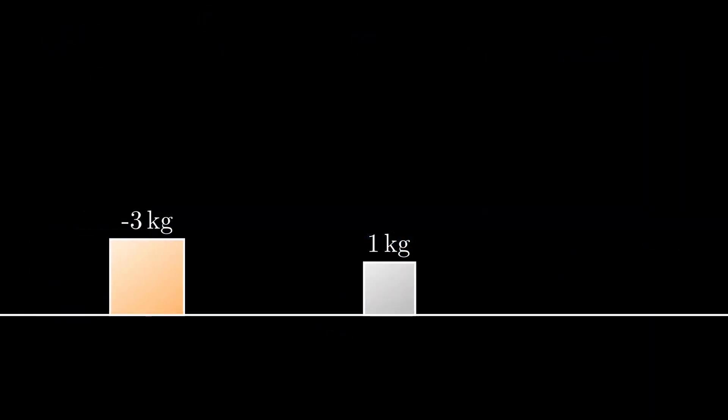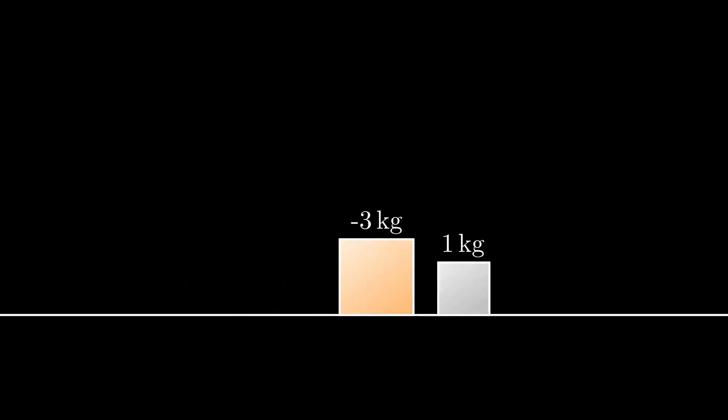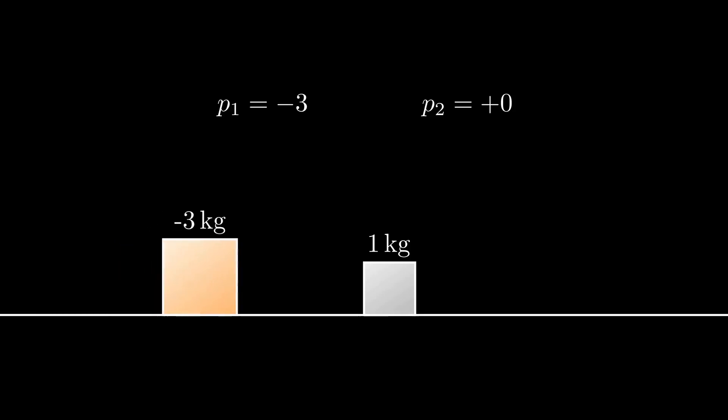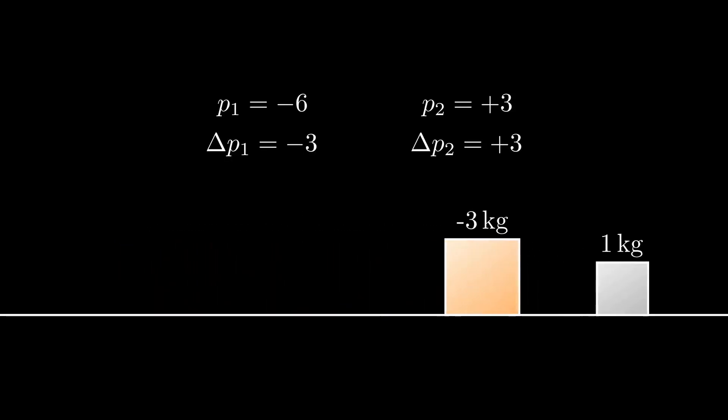We learned in part 1 that if a small positive mass collides elastically with a larger negative mass, the negative mass will bounce forward. In other words, a negative mass loses momentum the same as a positive mass, but its momentum is already negative, so it speeds up.